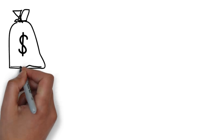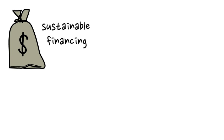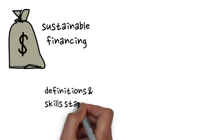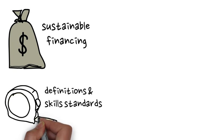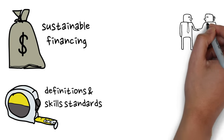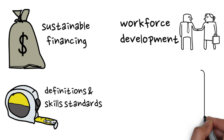So what will our CHW policy be about? The four areas of policy, again, are sustainable financing, definitions and skills standards, workforce development, and research and data.